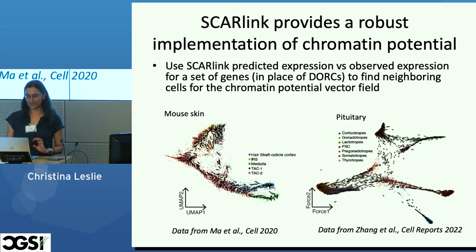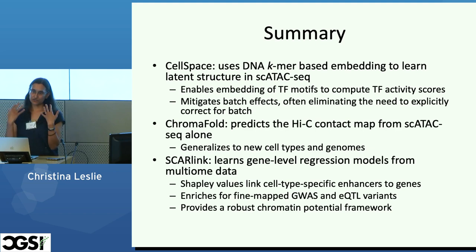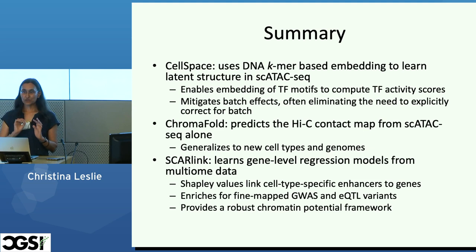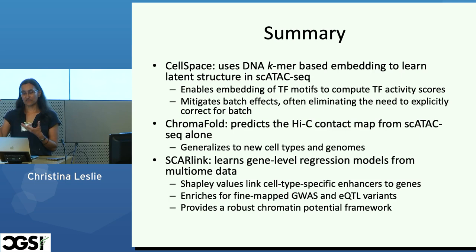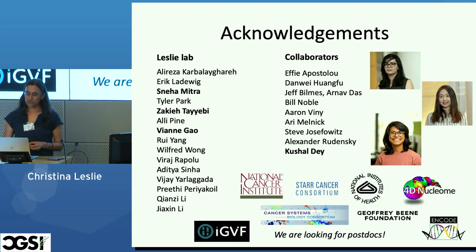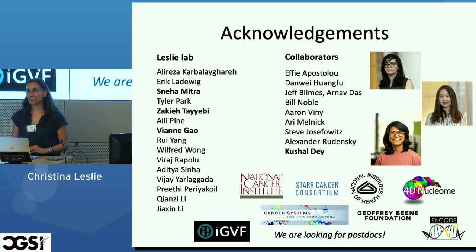To summarize: I told you about CellSpace, a sequence-informed embedding for single-cell ATAC. I told you about ChromaFold, predicting the contact matrix from single-cell ATAC alone. And I told you about SCARLink, learning single-cell regression models for multi-omic data that allow us to understand how genes are regulated in a cell-type-specific fashion. Thanks to all contributors and collaborators, especially Couchaudet for the SCARLink human genetic analysis. Happy to take any questions.